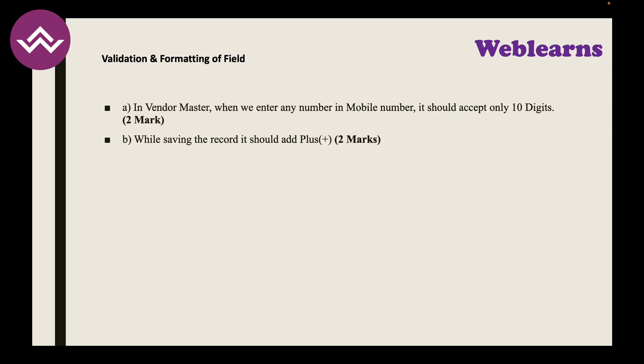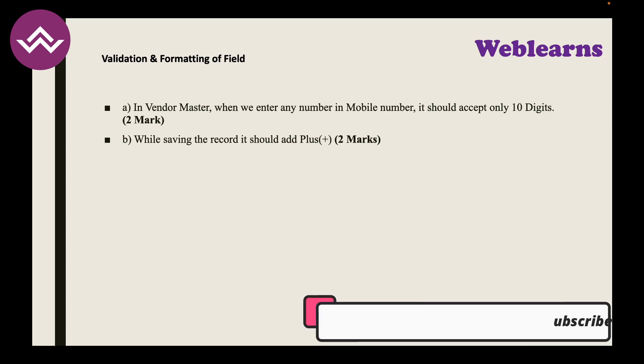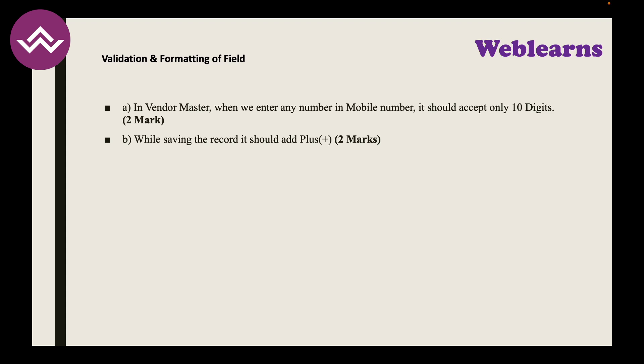Task F: Validation and formatting of fields in vendor master. When a number is entered in the mobile number field it should accept only 10 digits. While saving the record, a plus sign should be prepended to the mobile number — the result would look like '+' followed by 10 digits. Once both tasks are done, you achieve four marks.